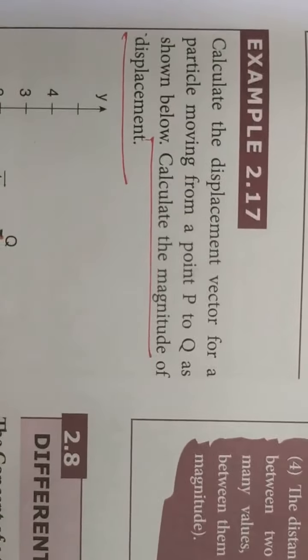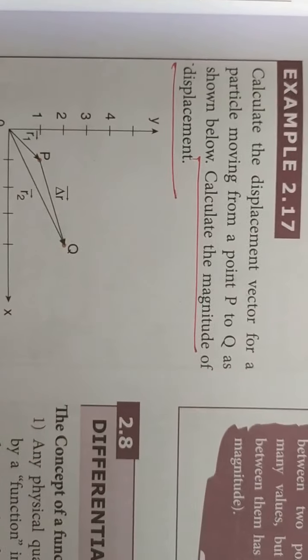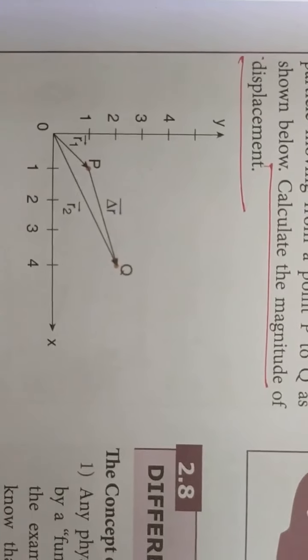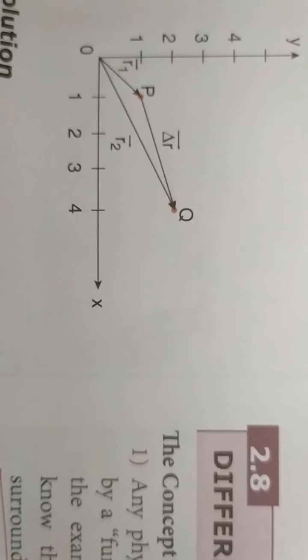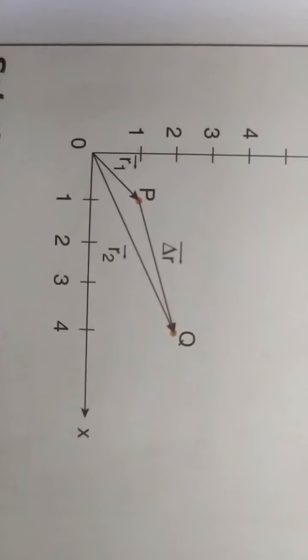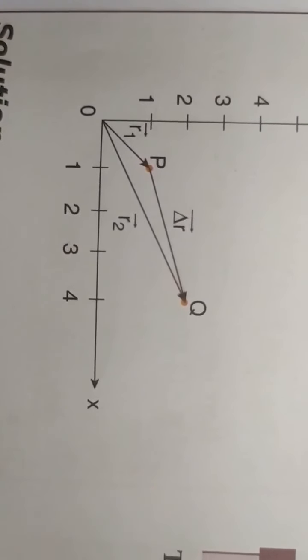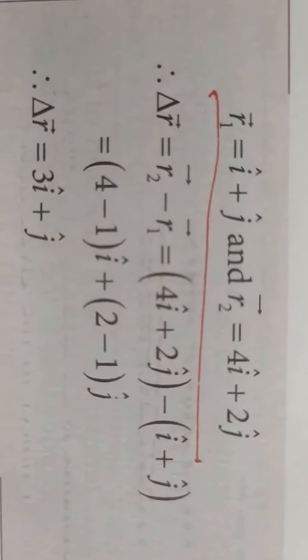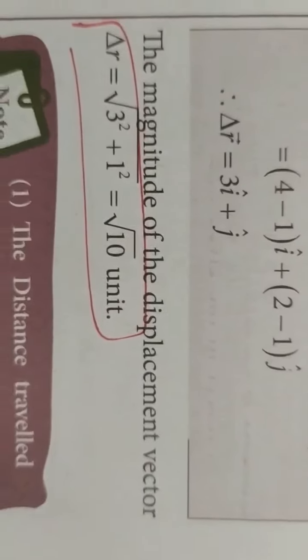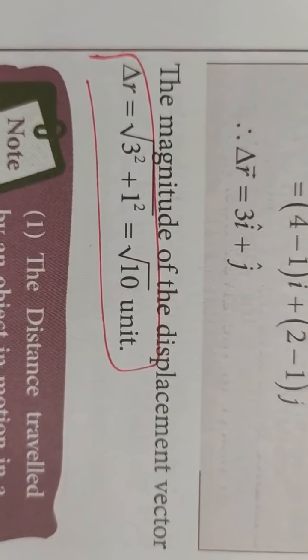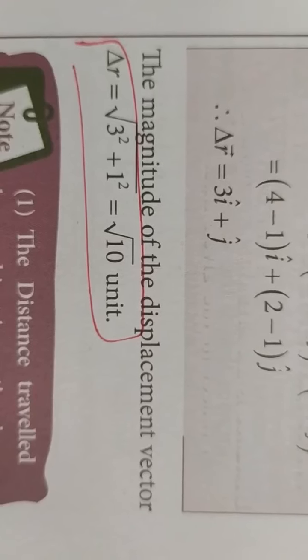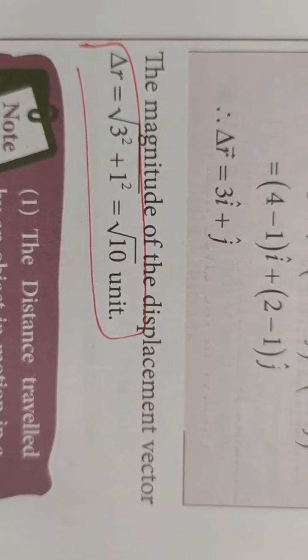Now let's calculate the displacement vector and its magnitude. P and Q are two positions. r1 vector equals i-cap plus j-cap (coordinates 1,1) and r2 vector equals 4 i-cap plus 2 j-cap (4 on x-axis, 2 on y-axis). Applying Δr = r2 − r1, we get Δr equals 3 i-cap plus j-cap. The magnitude is √(3² + 1²) = √10. This is how you find the magnitude of the displacement vector.